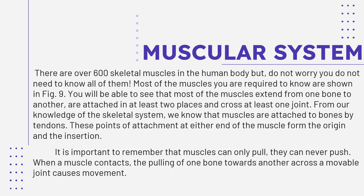It is important to remember that muscles can only pull — they can never push. When a muscle contracts, it pulls one bone toward another. For example, when you bend your arm back, that is a form of contraction. The pulling of one bone towards another across a movable joint causes movement. In short, muscles and the skeleton are very closely related — they work together.